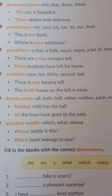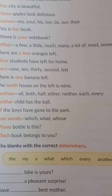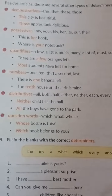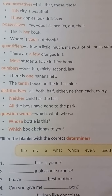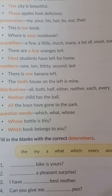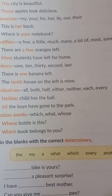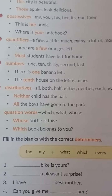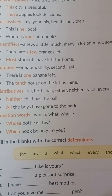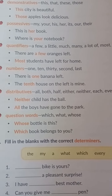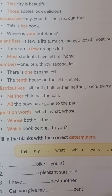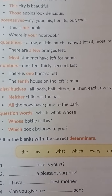Distributive means something that distributes among all — like all, both, half, either, neither, each, every. This shows distribution. For example: 'Neither child has the ball' — that means out of two children no one is having the ball. 'All the boys have gone to the park' — it indicates all, showing distribution.